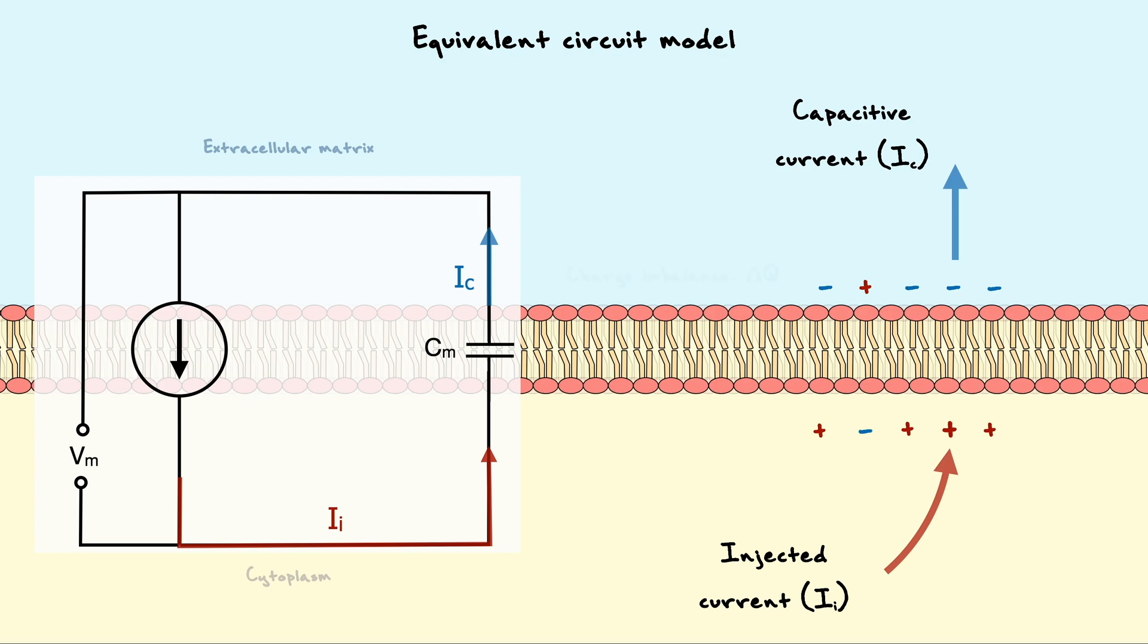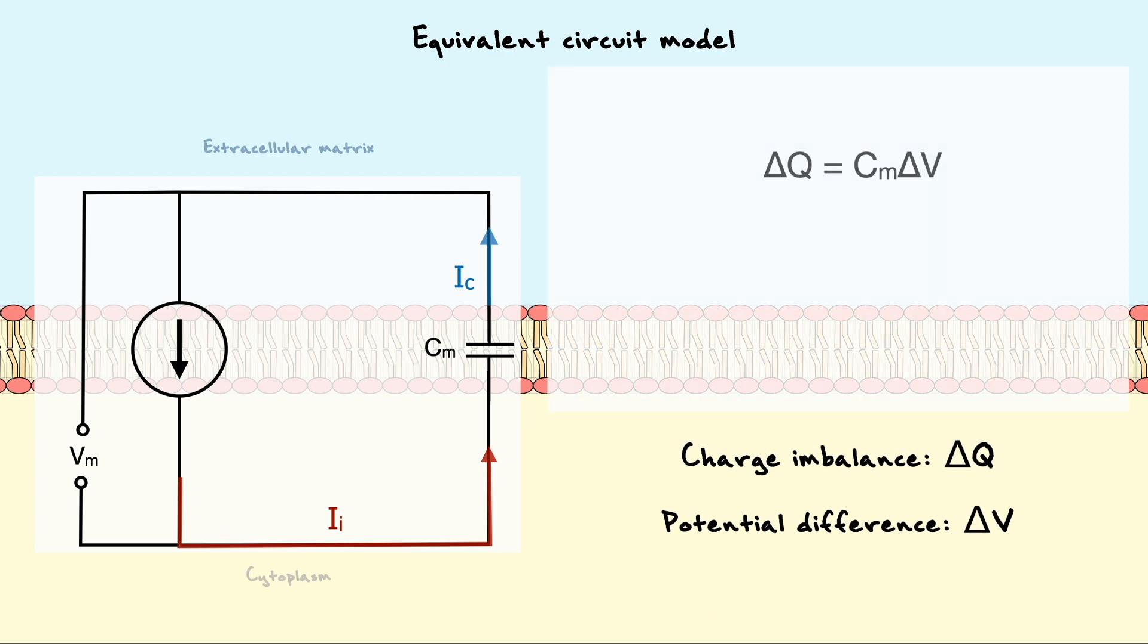Furthermore, the charge imbalance, which we can note as delta Q, creates an electric field across the membrane which produces a potential difference of delta V. Delta Q and delta V can be linked together through the membrane capacitance in the equation delta Q equals CM times delta V. Remember that this is just another way of writing the equation I first showed you when I introduced the membrane as a capacitor.